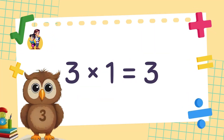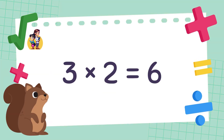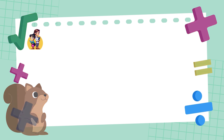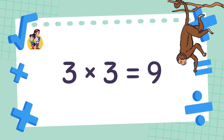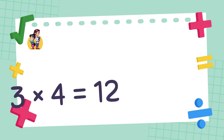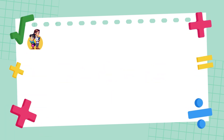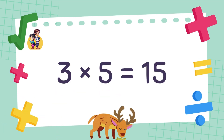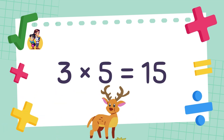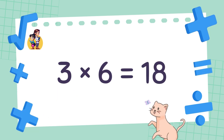3 times 1 is equal to 3. 3 times 2 is equal to 6. 3 times 3 is equal to 9. 3 times 4 is equal to 12. 3 times 5 is equal to 15. 3 times 6 is equal to 18.